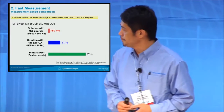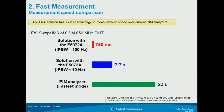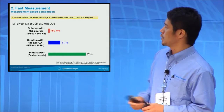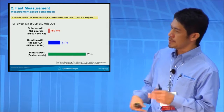Faster measurement: this is a measurement speed comparison against the conventional PIM analyzer. With the same measurement setup — a down sweep, total of 72 points, 800 MHz frequency band, with 43 dBm output power — conventional equipment takes more than 20 seconds. But with our new solution, it takes less than 10 seconds. By changing the IF bandwidth, we can achieve much faster measurement speed than conventional equipment.